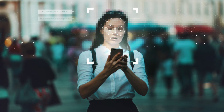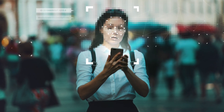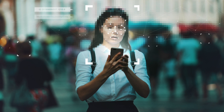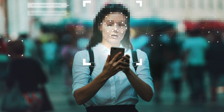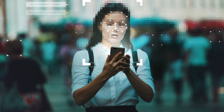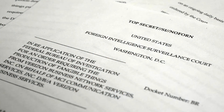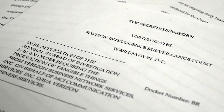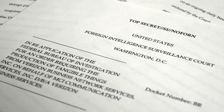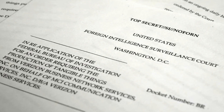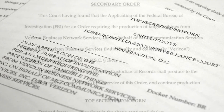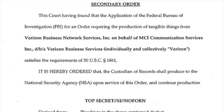The Washington Post noted that the government made six requests under the business records provision of the Patriot Act in 2007 during the Bush administration, 21 in 2009 — Obama's first year in office — and 212 last year, according to reports to Congress. However, it is not known how many are in the same style as the Verizon request.